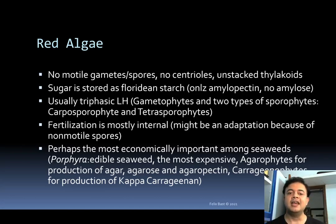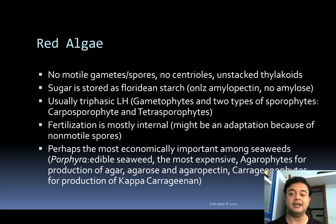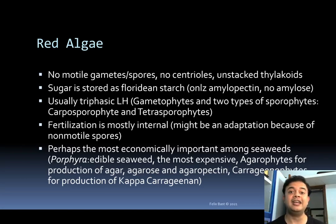The carbohydrate is stored as floridian starch rather than normal starch. Floridian starch is only amylopectin — there is no amylose — and amylopectin itself is highly branched. That is a main characteristic of this floridian starch. The name 'floridian' comes from Floridiophyceae, one of the very important classes of red algae, mostly marine.